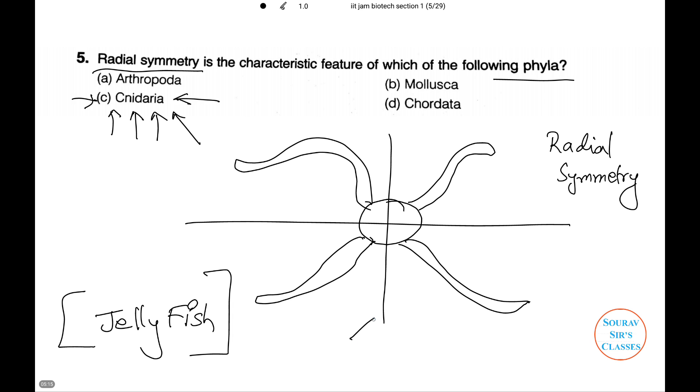When any plane which I'm marking it out here passes through the central axis of an individual and divides the organism into two identical halves, it is called radial symmetry. This type of symmetry is found in jellyfish which is of the phylum Cnidaria. Let's try another very important question.